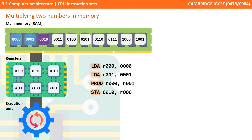In another CPU's instruction set we might find that the MULT command doesn't exist — it's not available. In this case we'd need to use a number of simpler commands that were available in the CPU's given instruction set. In this situation, using the given commands available, we can produce the same result using four lines.